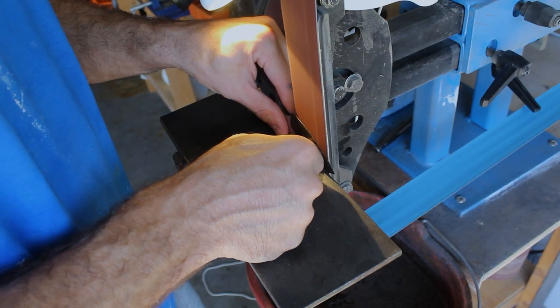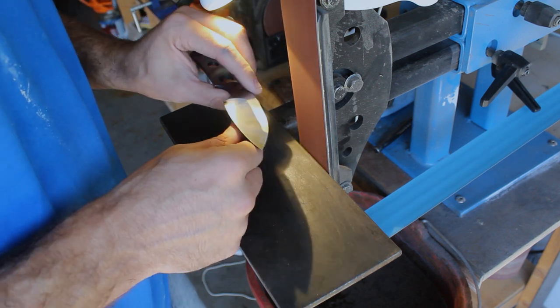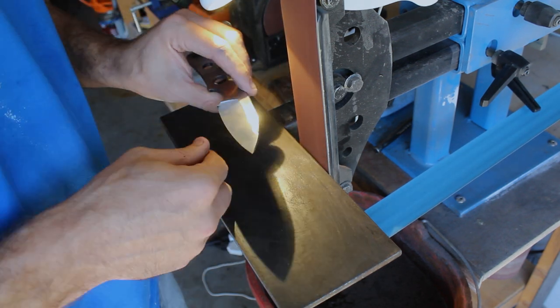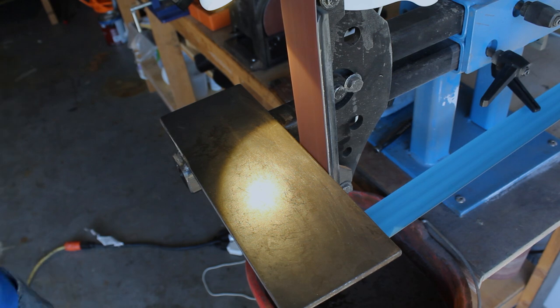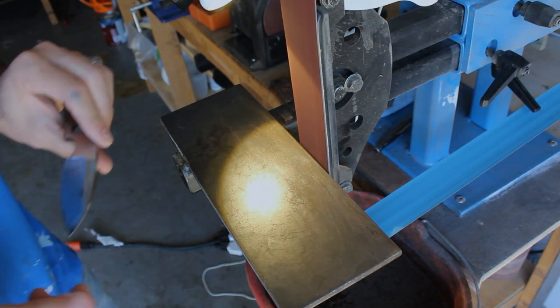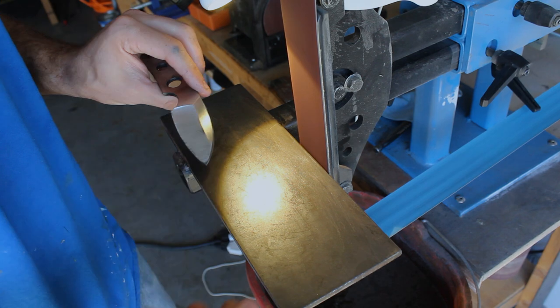Now I need to clean the knife up so I will head back to the belt sander and grind the knife from 120 grit up through 400 grit and then I will run it through the surface conditioning belts and then it'll be ready for the acid bath.